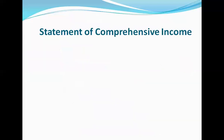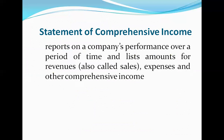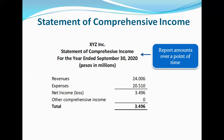Now let's move on to the statement of comprehensive income. It reports on a company's performance over a period of time and lists amounts for revenues — also called sales — expenses, and other comprehensive income. This example of a statement of comprehensive income reports amounts over a period of time: for the year ended September 30, 2020.